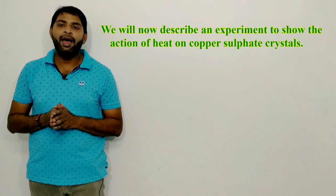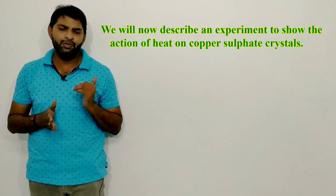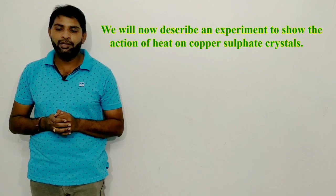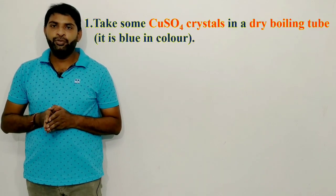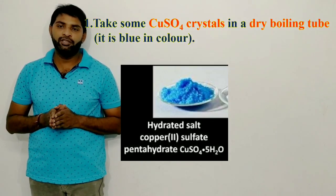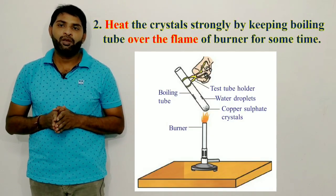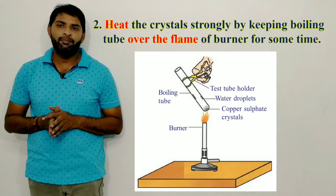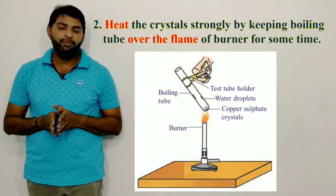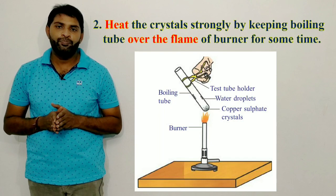We will now describe an experiment to show the action of heat on copper sulfate crystals. Take some CuSO4 crystals in a dry boiling tube — these crystals are blue in color. Heat the crystals strongly by keeping the boiling tube over the flame of a burner for some time.